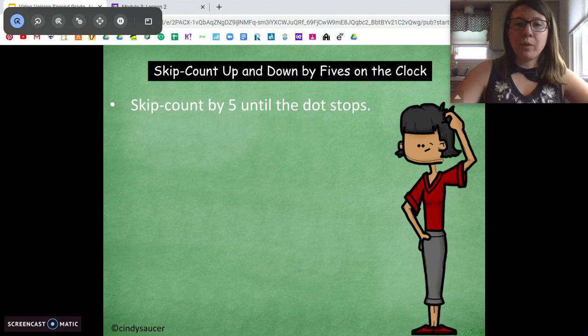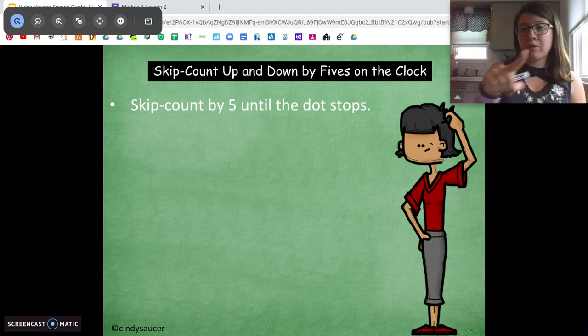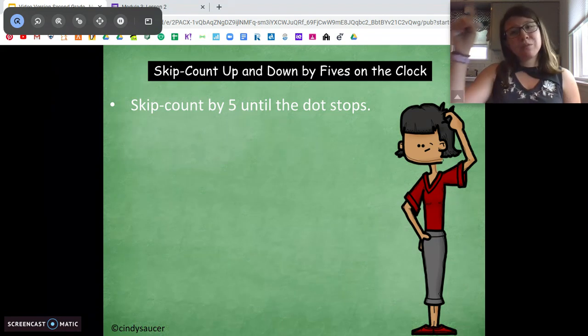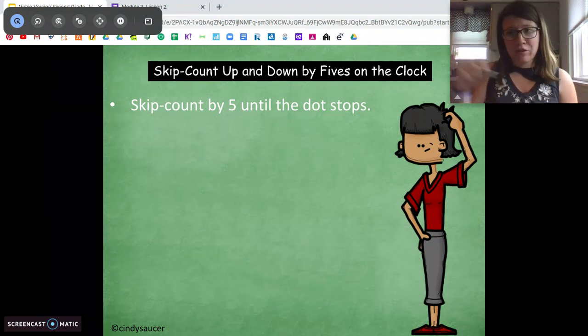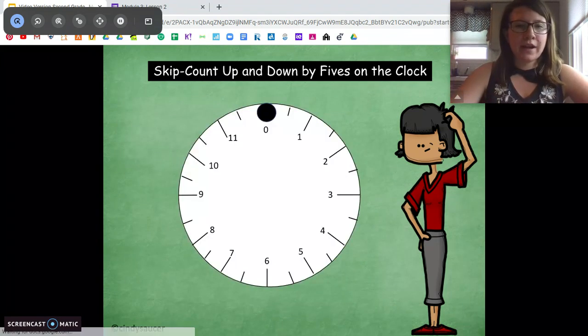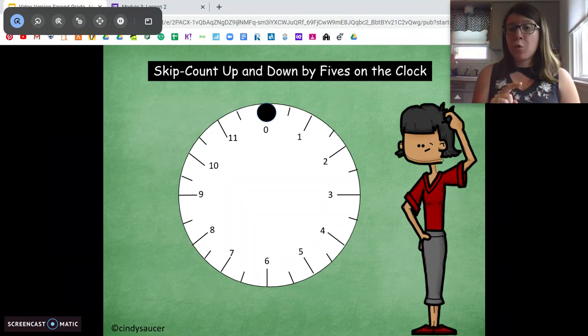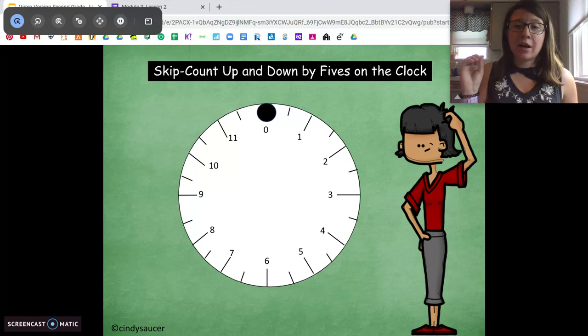First we're going to warm up with counting by 5 around the clock. Remember it's important to keep our skip counting in our brains. It's important to recognize this pattern around the clock as well. So I'm going to move the dot. We're going to count by 5s. When the dot stops, I want you to tell me how much time has passed.